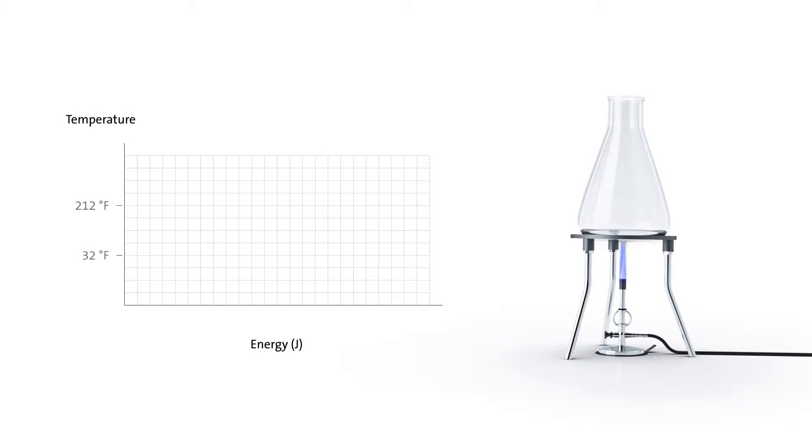If frozen water is heated from minus 15 degrees Celsius, the temperature rises continuously until the melting point is reached. Once the melting point has been reached, the energy of the particles starts to change. The substance's physical condition now also changes.